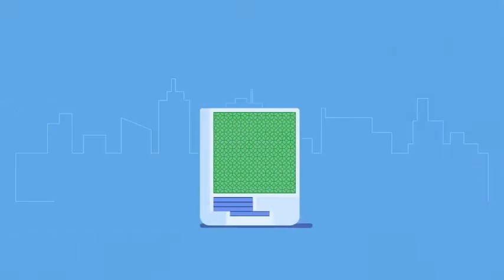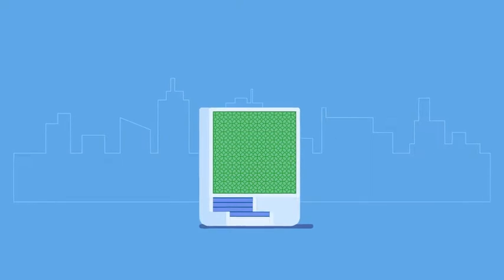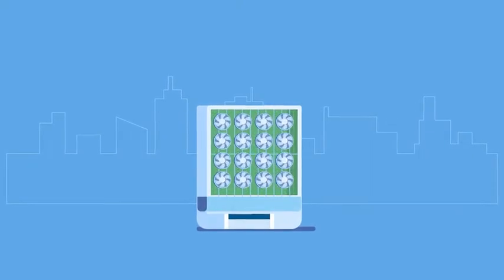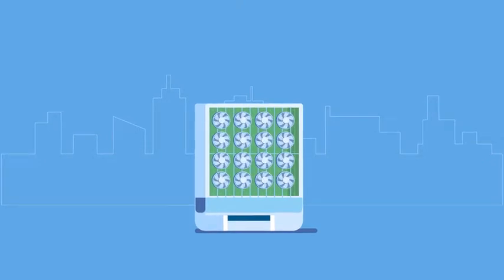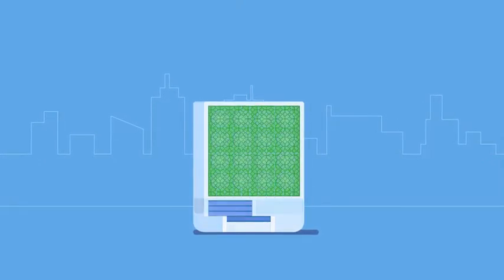The CityTree is the perfect combination of plants and modern Internet of Things technology. Special moss cultures filter fine dust from the air by transforming them into their own biomass without any waste.